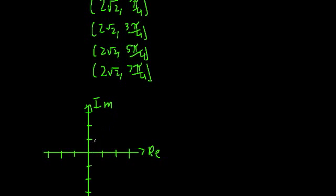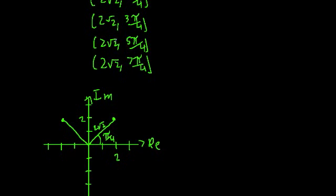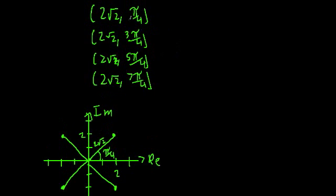The point (2√2, π/4) is right about here — if this is 2 and this is 2, the radial line is going to be 2√2 and the angle is π/4. That's one solution. Then we plot (2√2, 3π/4), which is right here. Then (2√2, 5π/4), which is right here. And (2√2, 7π/4) is right here. All four points have the same distance from the origin, shifted by a phase of π/4, and all separated by an angle of π/2. Since these points are our four solutions, we can clean this up by rewriting in Cartesian form.